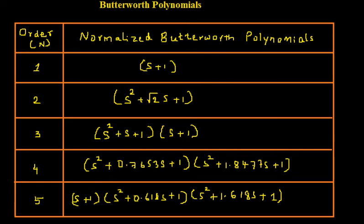In the previous lecture we prepared this table that we call Butterworth polynomials for the orders of 1, 2, 3, 4, 5. These were the polynomials and we said we will consider how to prove it in the next video. So we will consider it now.